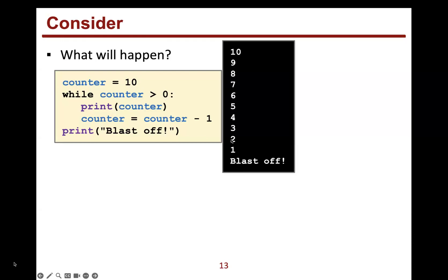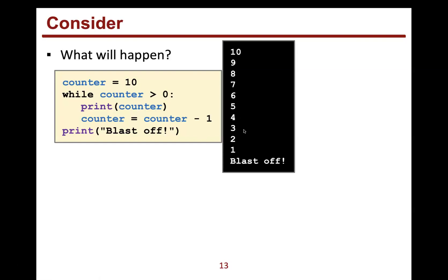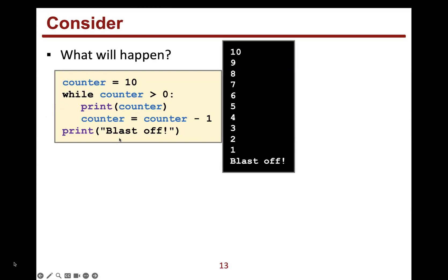When it gets to two, it decreases to one. Is one greater than zero? Absolutely, so it prints one, then counter equals counter minus one — which is zero. Is zero greater than zero? No. So that's when we exit the loop and print 'blastoff', which is the code after the loop.